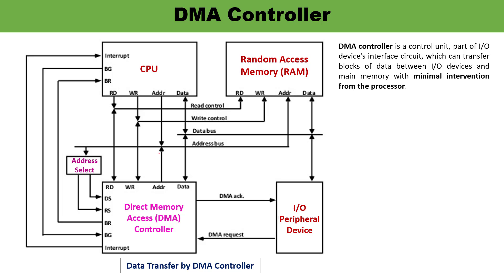This is the detailed block diagram of the DMA controller. You can see there is a processor (CPU), main memory (RAM), IO peripherals, and the DMA controller. The DMA controller acts as an interface and communicates with the processor through the data buses and control lines. You can see read, write, address, and data lines in the processor, DMA controller, and RAM.